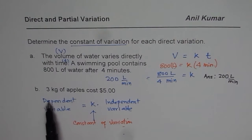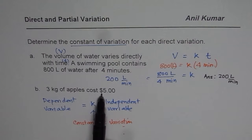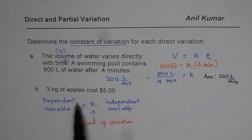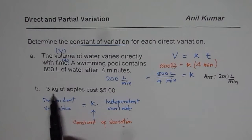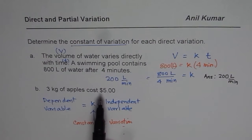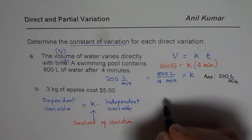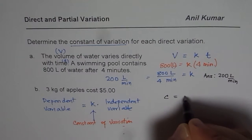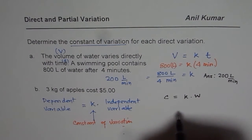Now here's part B: 3 kg of apples cost $5. More you buy, more you pay; less you buy, less you pay. So the weight or mass of apples is related to the cost — this is a direct variation. We need to find the rate. The cost is changing, so we say: cost of apple C equals constant k times weight w.